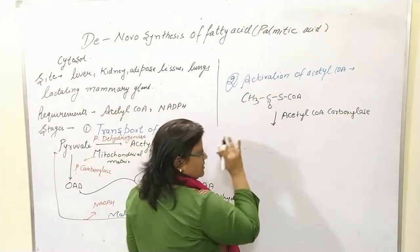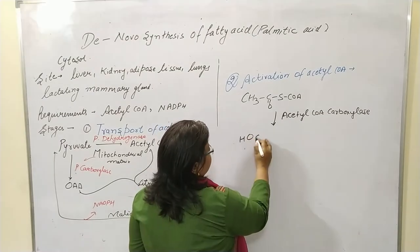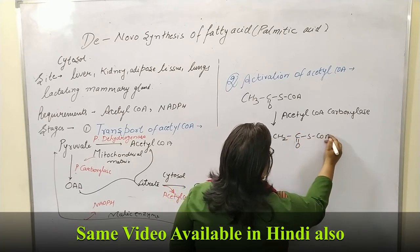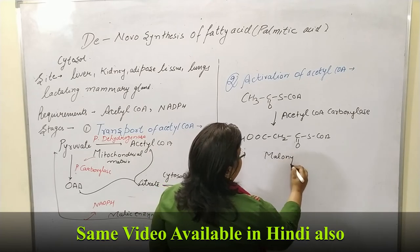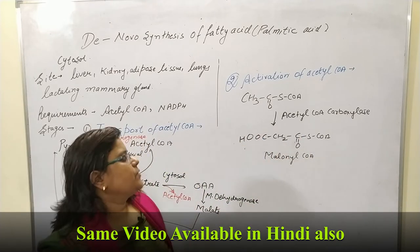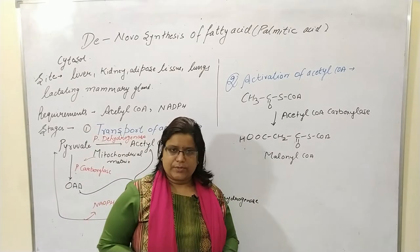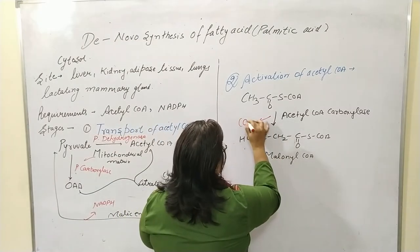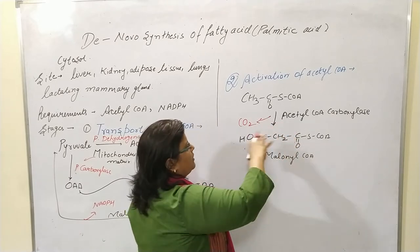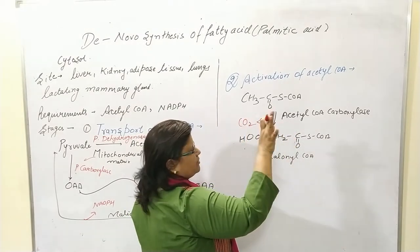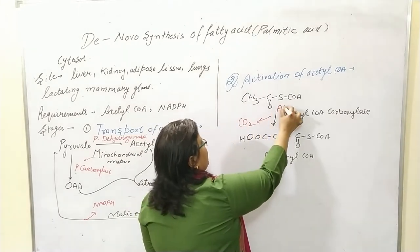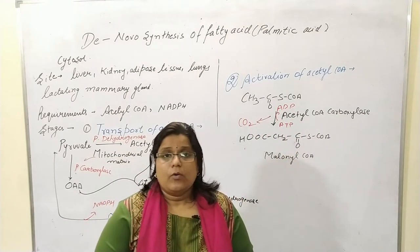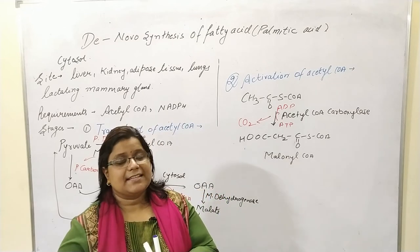The malonyl coenzyme A has the structure: COOH–CH₂–C(=O)–S–CoA. During this reaction, CO₂ is incorporated (that is why the enzyme is called carboxylase), and ATP is consumed, producing ADP. This malonyl coenzyme A will add carbon units in the fatty acid synthase complex.